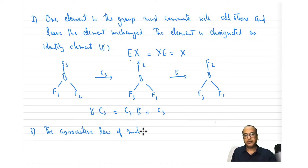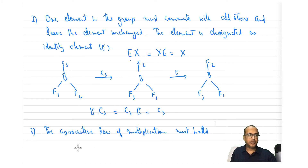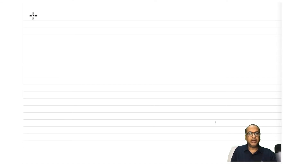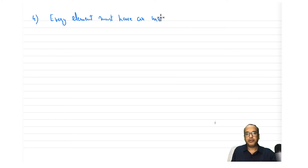The third property is the associative law of combination — called combination because you cannot really multiply symmetry operations, you combine them. This must hold, and we already saw in the last class that symmetry operations do follow the associative law of combination.